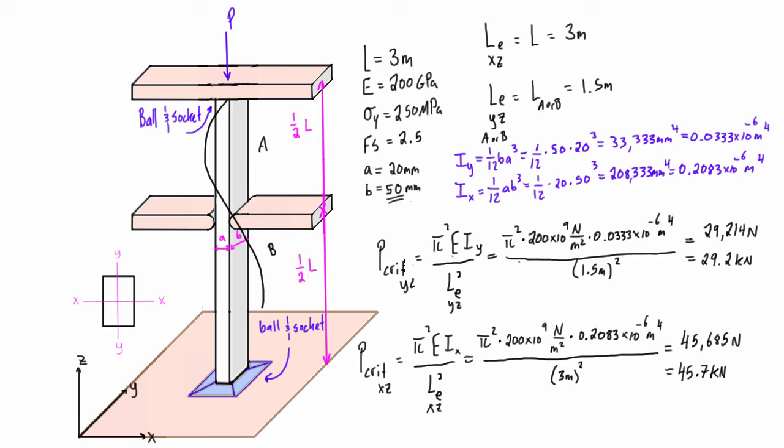So in this case, we look at them and we take the smaller of the two values, and that is going to be buckling in the YZ plane. So let's go and throw a box around that. It's going to be 29.2 kN, and that is going to be what causes us to get buckling. And that buckling is going to be in the YZ plane before it buckles. We would need more applied load for it to buckle in the XZ plane, but it's going to buckle first in that YZ plane.